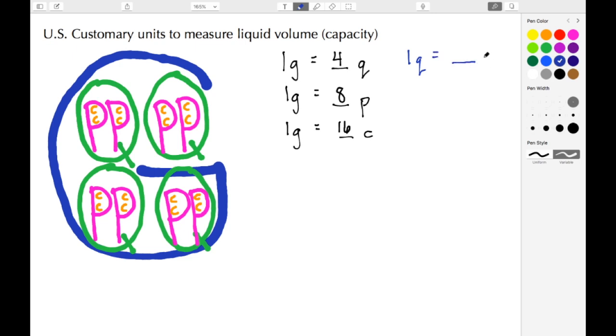If I wanted to work with quarts and I wanted to know how many cups were in a single quart, again I could take any one of these Q's and just count up the number of C's. And you see here that we have just four.